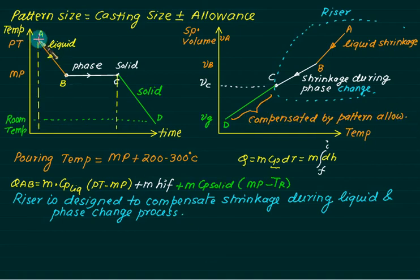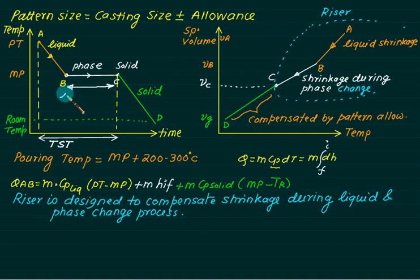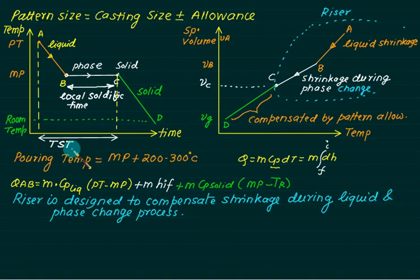The time required to cool from point A to point C is called the total solidification time, written as TST. From B to C it is called the local solidification time. We are interested in the total solidification time, which is calculated using Chvorinov's rule.